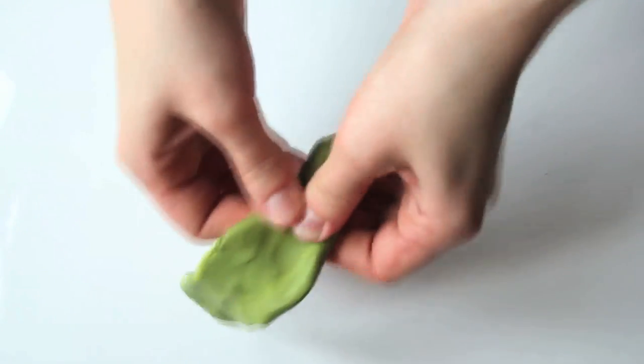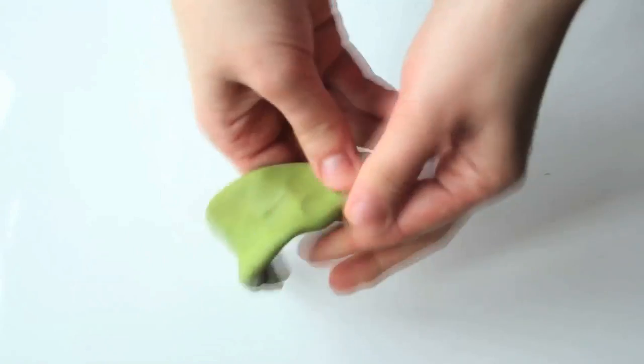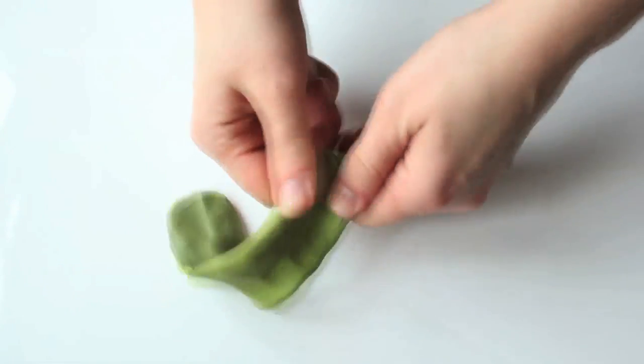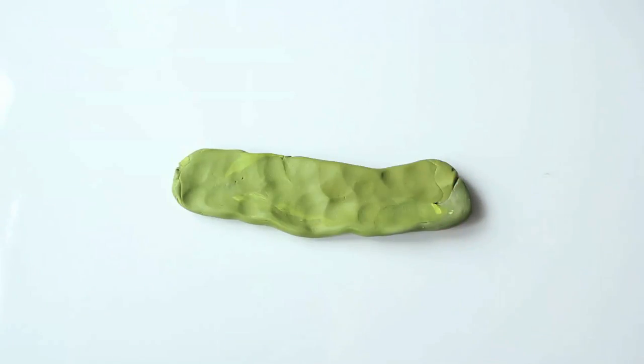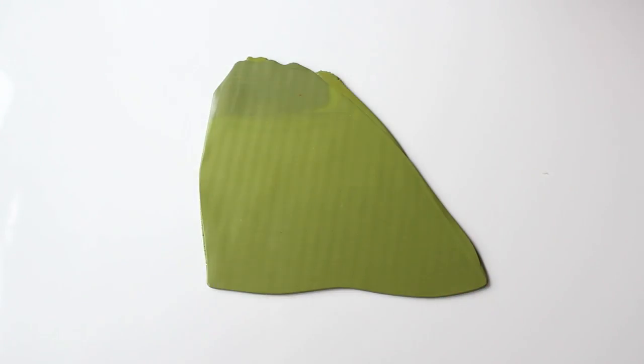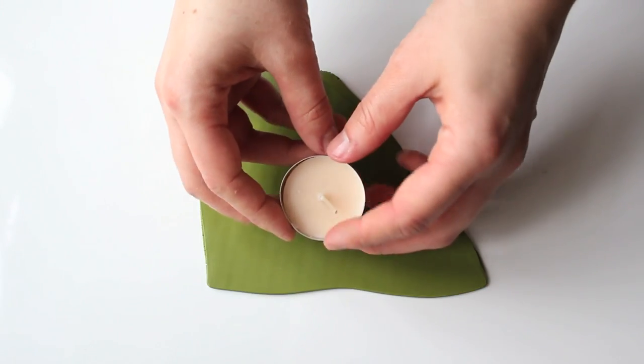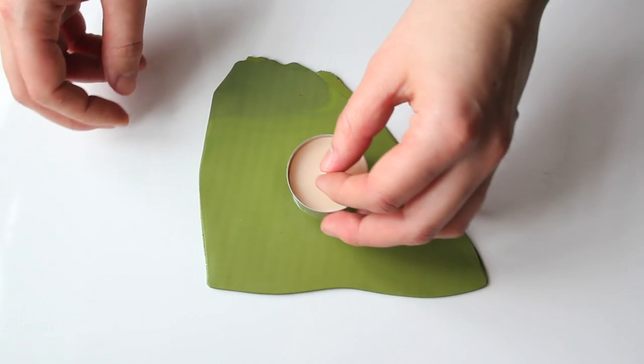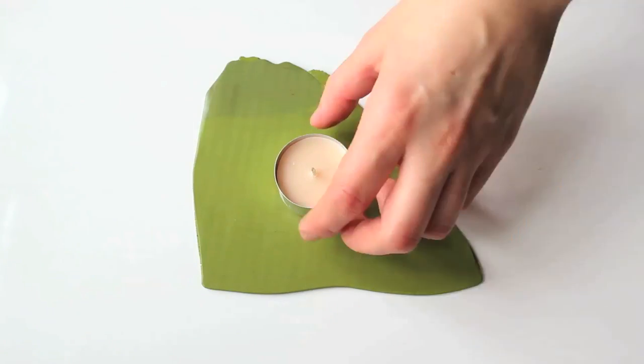I usually roll it into a sausage and flatten it with my fingers before I put it through. My pasta machine is on thickest layer as now we are making a sturdy base for the lotus leaves. The conditioned clay sheet should be quite big as we will be cutting out a circular base and five green leaves from it.